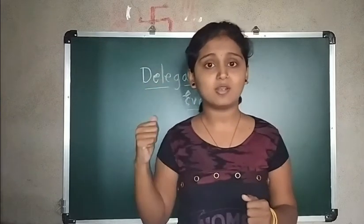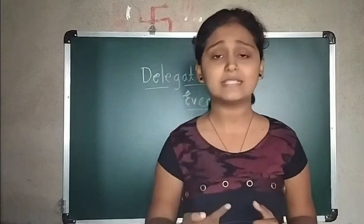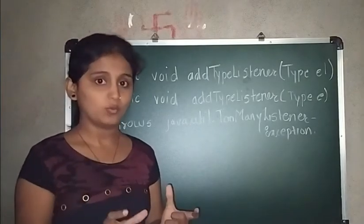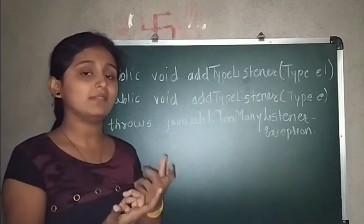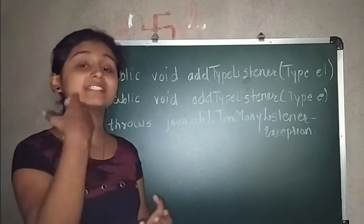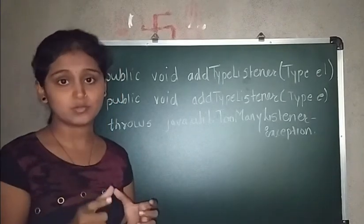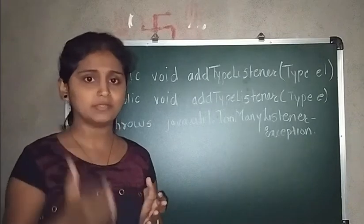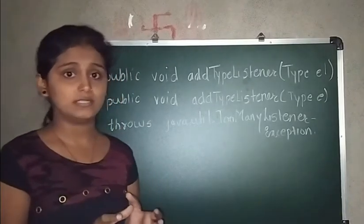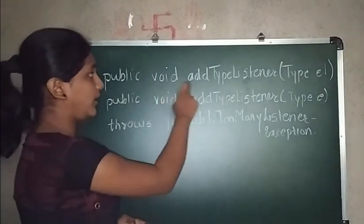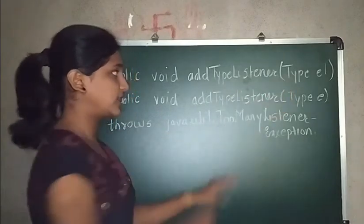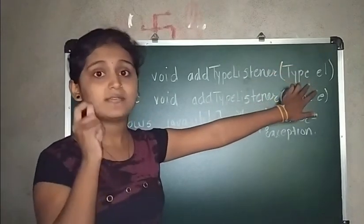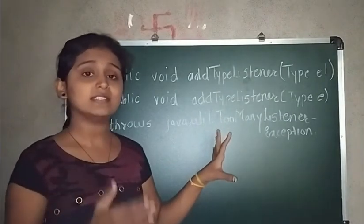Now the main points of the delegation event model: event source and event listener, and how to register. A source is an object that generates an event, which happens when there is an internal change in the state of a particular object. The source can register with one or more events. The registration method is: public void addTypeListener(type el), where type is the name of the event and el is a reference.